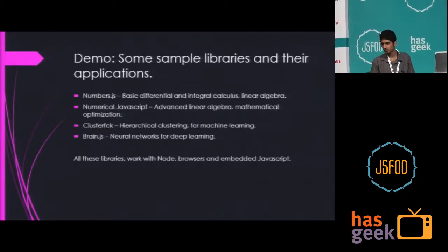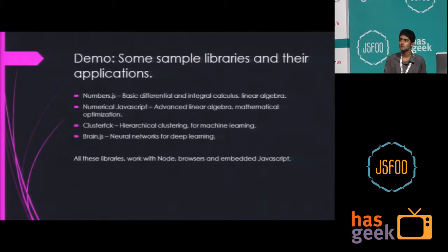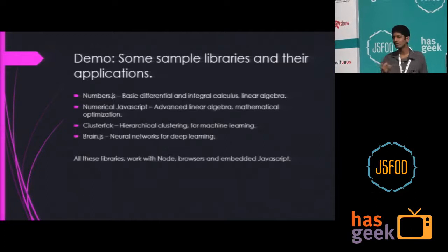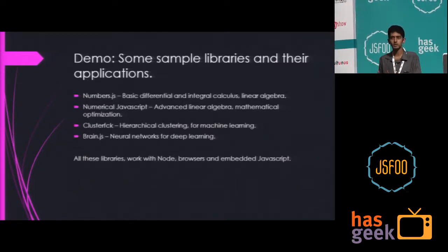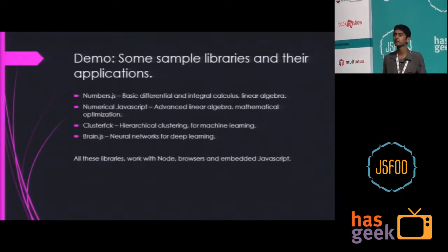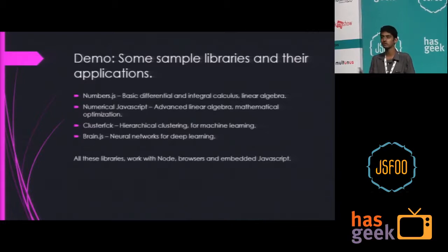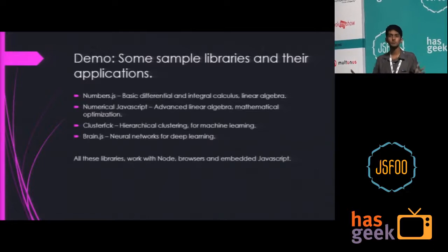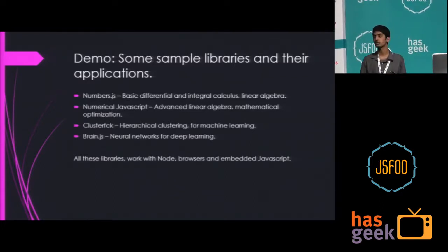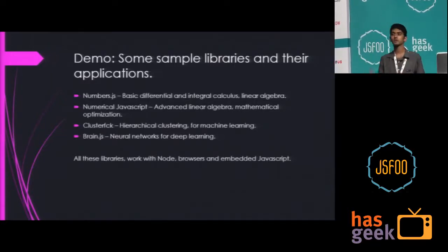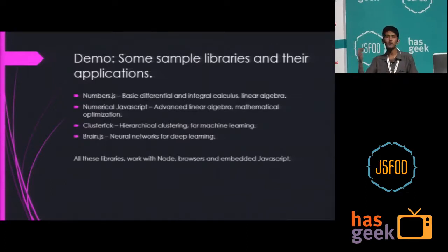There are a couple of good libraries for JavaScript for scientific computing. There's numbers.js — very basic differential and integral calculus, basic linear algebra. Then there's numerical JavaScript, which is slightly more advanced and provides math optimization. Math optimization has a lot of applications: airline fuel routes and ticketing costs, and supply chain optimization for retailers like Amazon or Flipkart — a huge problem for online retailers. Then we have something called clusterfuck — please excuse the language. It's a clustering library. Clustering is a really powerful technique in machine learning, grouping seemingly disparate objects based on a common variable or parameter.